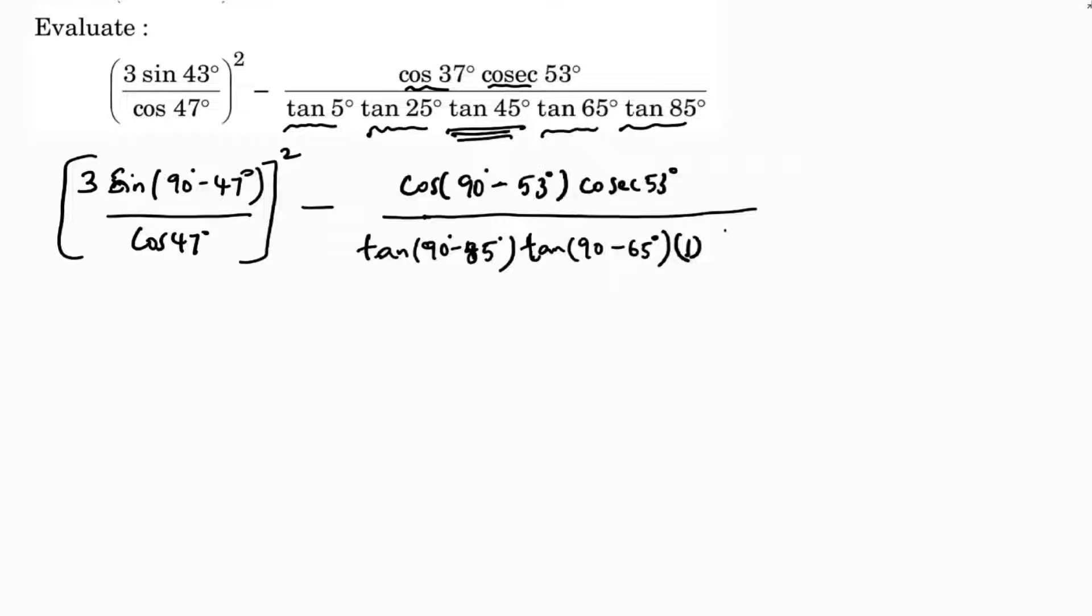Now complementary ratios: if you observe, sin 90 minus theta is cos theta, and cos 90 minus theta is sin theta.